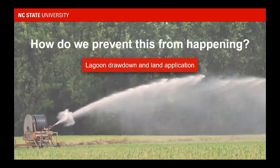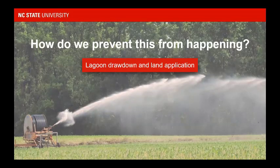So what tools do we have to prevent this from happening? We call that drawdown. Between the start and stop pump is where we're typically irrigating. Drawdown is what we consider any lowering of the lagoon below that stop pump. Drawdown is not a negative thing — it's a great tool to combat the potential for large incoming storm events.